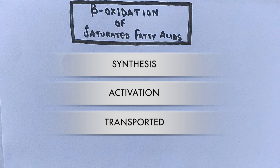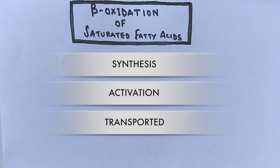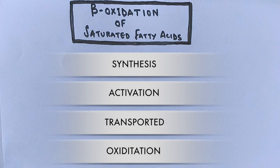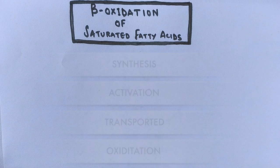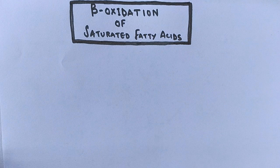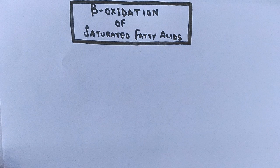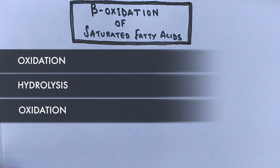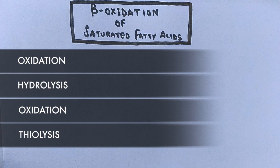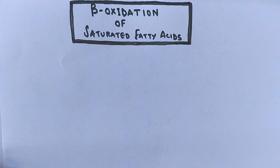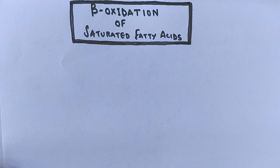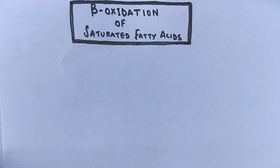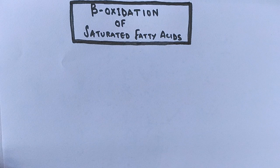Once inside the mitochondrial matrix, fatty acyl-CoA is oxidized with oxidation of the beta carbon, from where it gets its name—beta-oxidation of fatty acids. Long-chained fatty acids are subjected to a repeated four-step process: oxidation, hydrolysis, oxidation again, and finally thiolysis, which separates the molecule into two parts, removing two carbons from the chain successfully. Now let's see in detail how this beta-oxidation of saturated fatty acids occurs within the mitochondrial matrix.